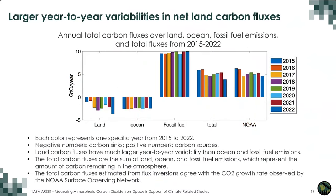Integrating carbon fluxes of each category — land flux, ocean flux, fossil fuel — over a year and over the globe gives yearly carbon fluxes in gigatons of carbon per year. This plot shows yearly carbon fluxes from land biosphere, ocean, and fossil fuel. The total is the sum of land, ocean, and fossil fuel, plus the NOAA observed increase of atmospheric carbon each year. Negative numbers indicate carbon sink; positive numbers indicate carbon source. From 2015 to 2022, both land biosphere and ocean act as carbon sinks, with land carbon fluxes having very large year-to-year variability.